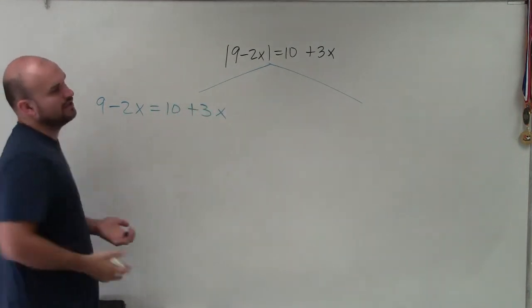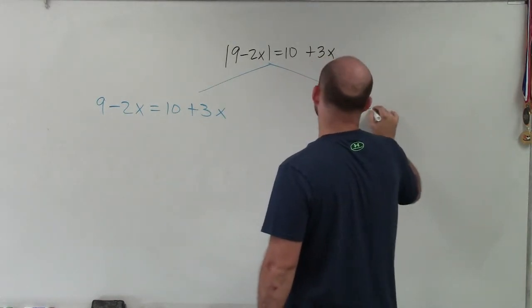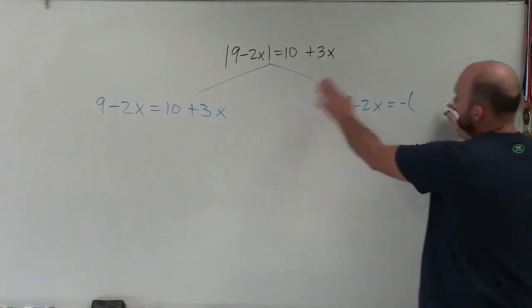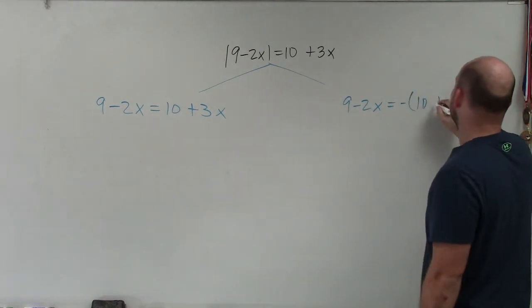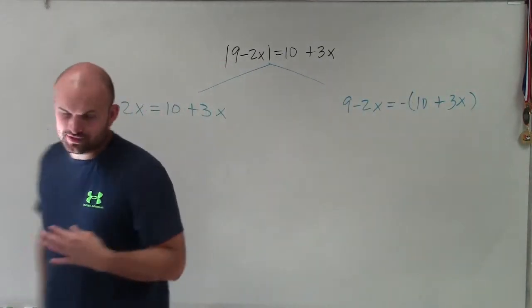So this would be solving for the positive value. And then we can set up another equation setting up for the negative value. Now, when you're setting up for the negative value, what we're simply going to do is set our second side of our equation and make that negative. So you can see I'm multiplying by negative 1.